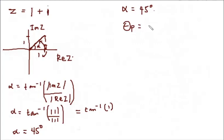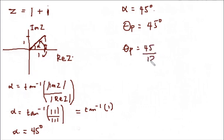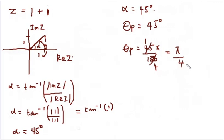So theta_p equals 45 degrees. In terms of radians, theta_p equals 45 over 180 times pi, and since 45 is one quarter of 180, this is pi over 4.